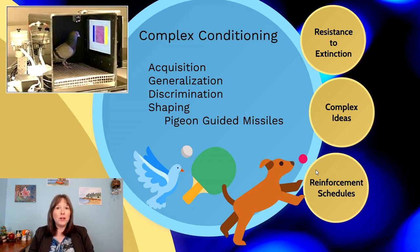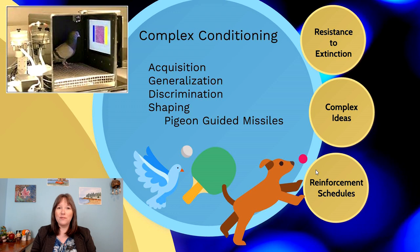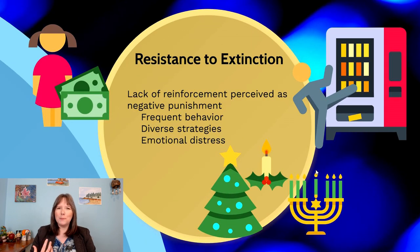You might notice that acquisition, generalization, and discrimination are listed here, but not extinction. That's because extinction works very differently in operant conditioning compared to classical conditioning — we experience what's known as resistance to extinction.